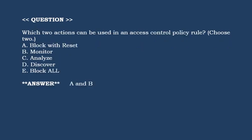Next question: Which two actions can be used in an access control policy rule? Choose two options. Option A: Block with reset. Option B: Monitor. Option C: Analyze. Option D: Discover. Option E: Block all. Correct answer is Option A and Option B.